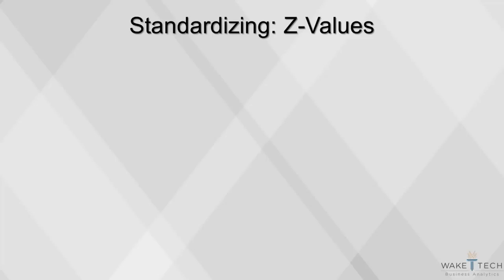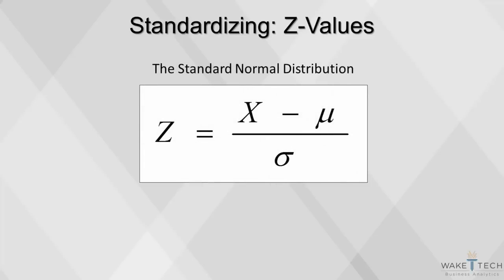There are indefinitely many normal distributions, one for each pair of standard deviation and mean. One particular combination — the standard normal distribution — deserves special attention. All normal distributions can be converted into the standard normal curve by subtracting the mean and dividing by the standard deviation. All the integrals for the standard normal distribution have been calculated and put into a table, and we also have software to help, so we never have to integrate the long way.